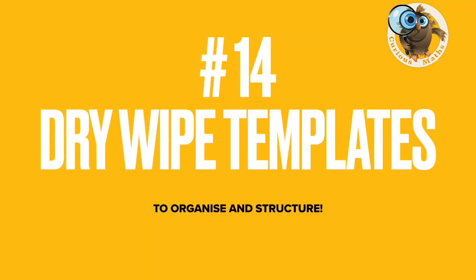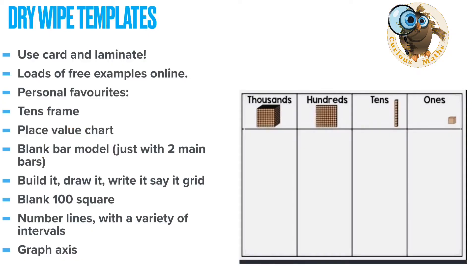Number fourteen: dry wipe templates. These really help organise and structure children's maths, and there are loads of free examples online — print them on card and laminate them. My personal favourites: a tens frame for Key Stage 1, a place value chart, a blank bar model with two main bars so children can draw intervals on, a 'build it, draw it, write it, say it' grid, a blank hundred square, various number lines, and a graph axis for statistics.